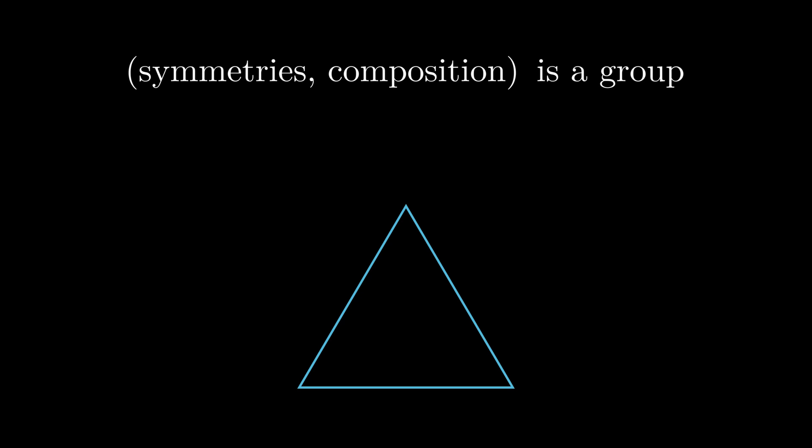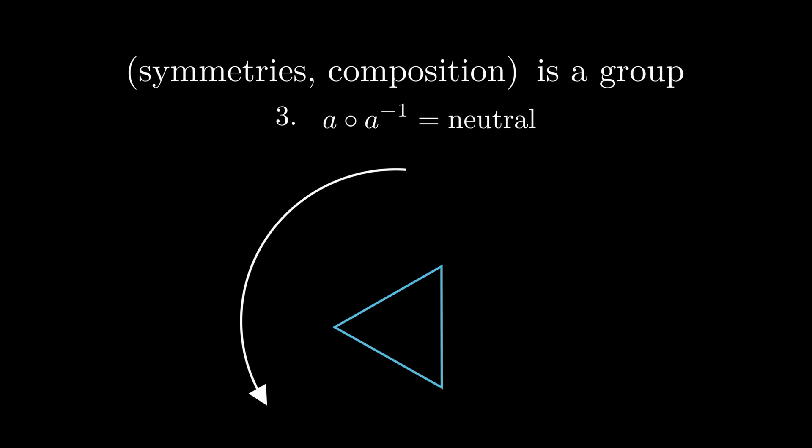And to show that it really is a group, let me quickly mention that, first of all, doing the actions AB then C is the same as A then BC. Essentially, the result is the same no matter what associative order we execute it in. The second thing is that there's a neutral action. In this case, it's clearly the do-nothing transformation. And third, every action has an inverse. For example, the 120 degree is inverses with 240 degrees and the flip operations are their own inverses. So clearly these specific symmetries form a group.